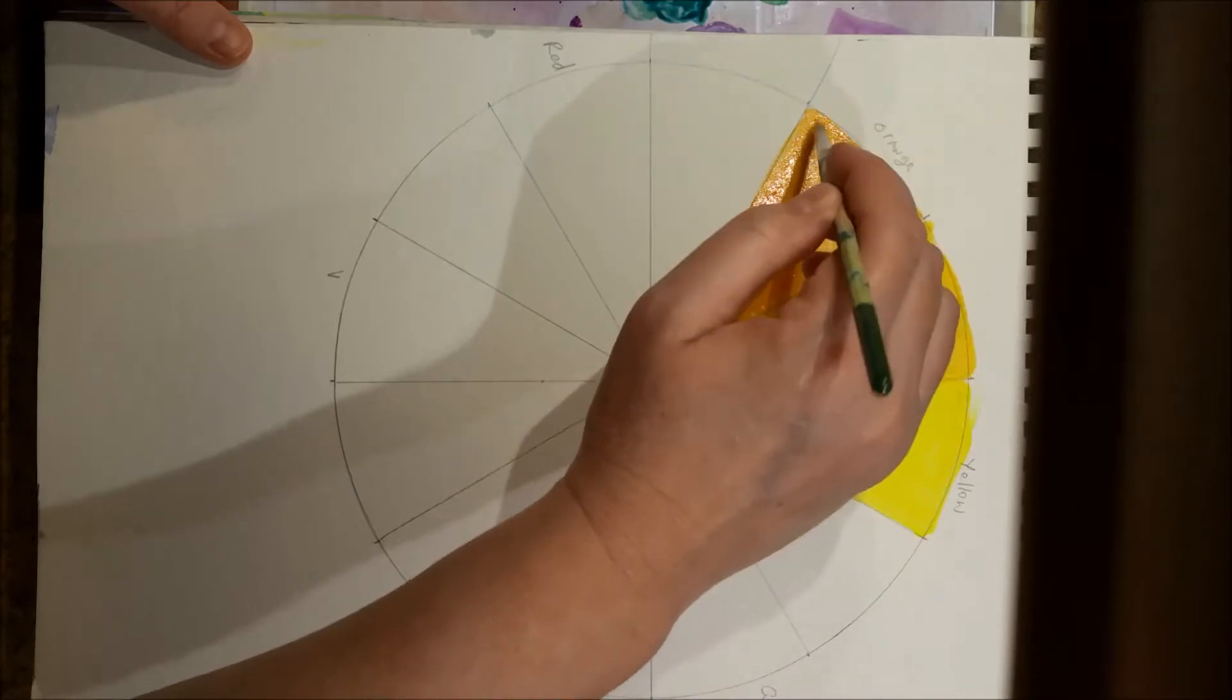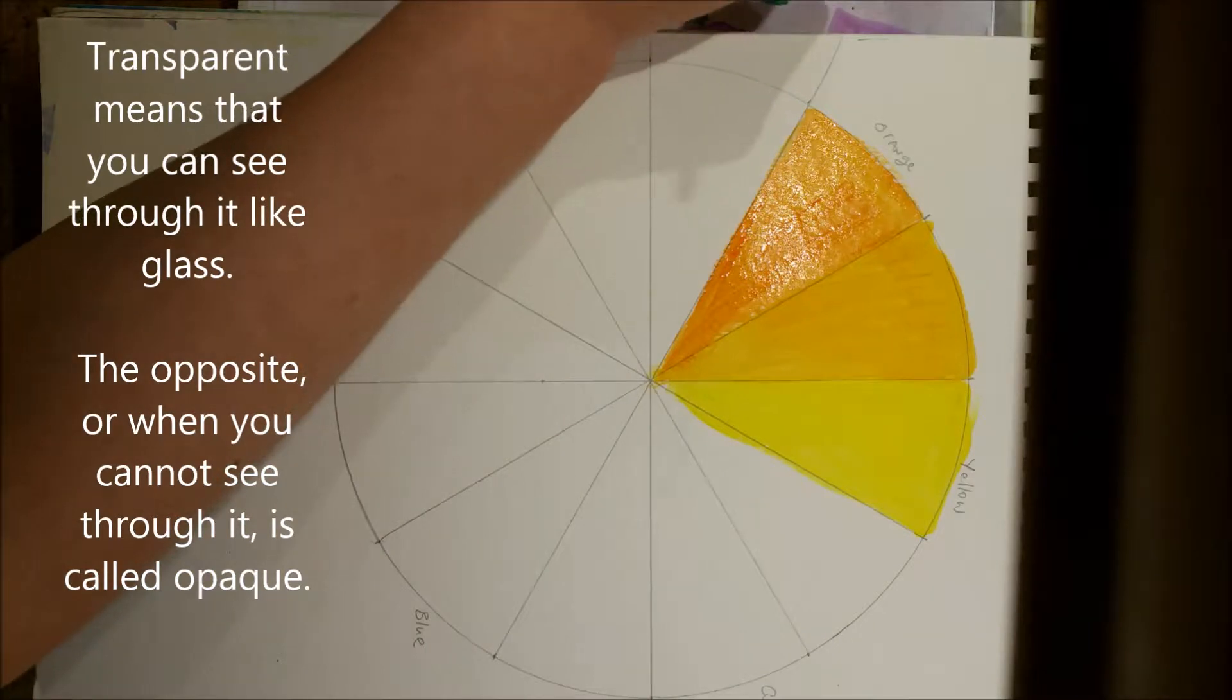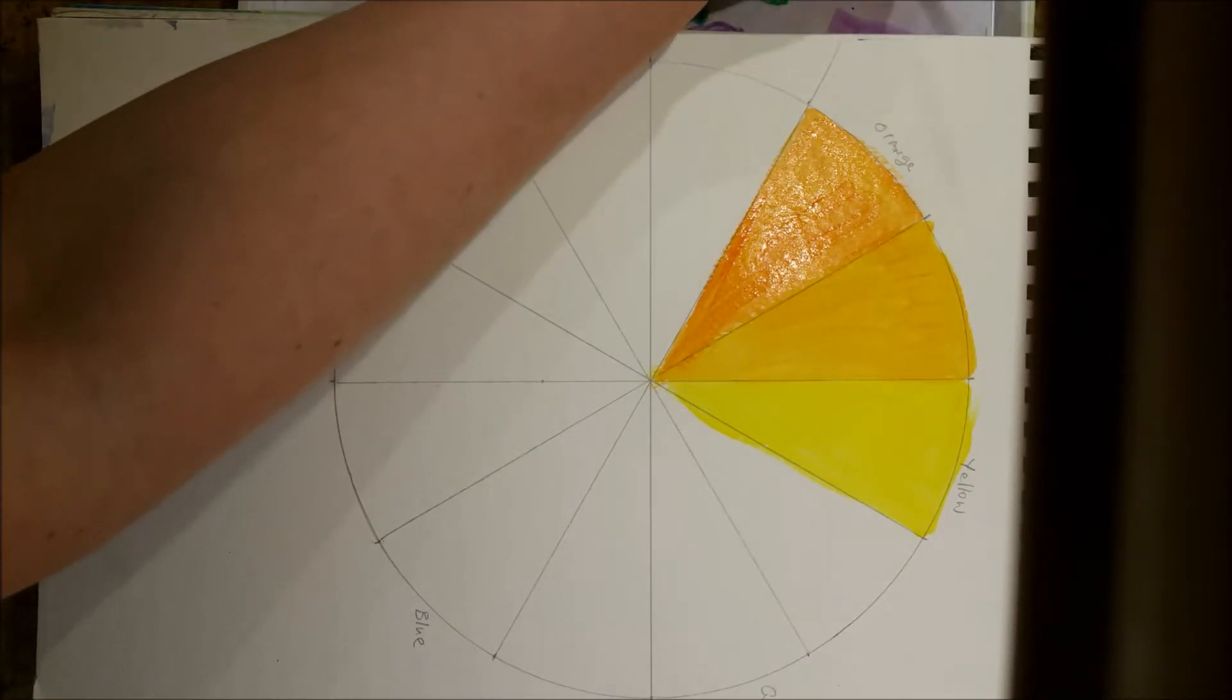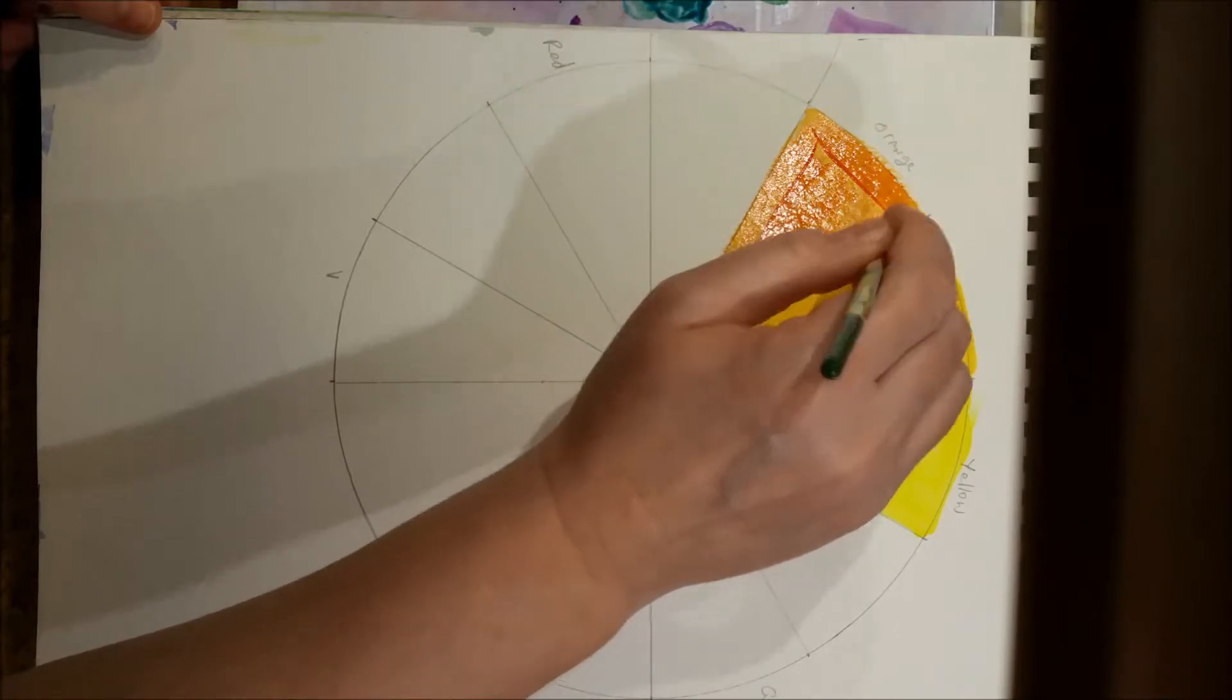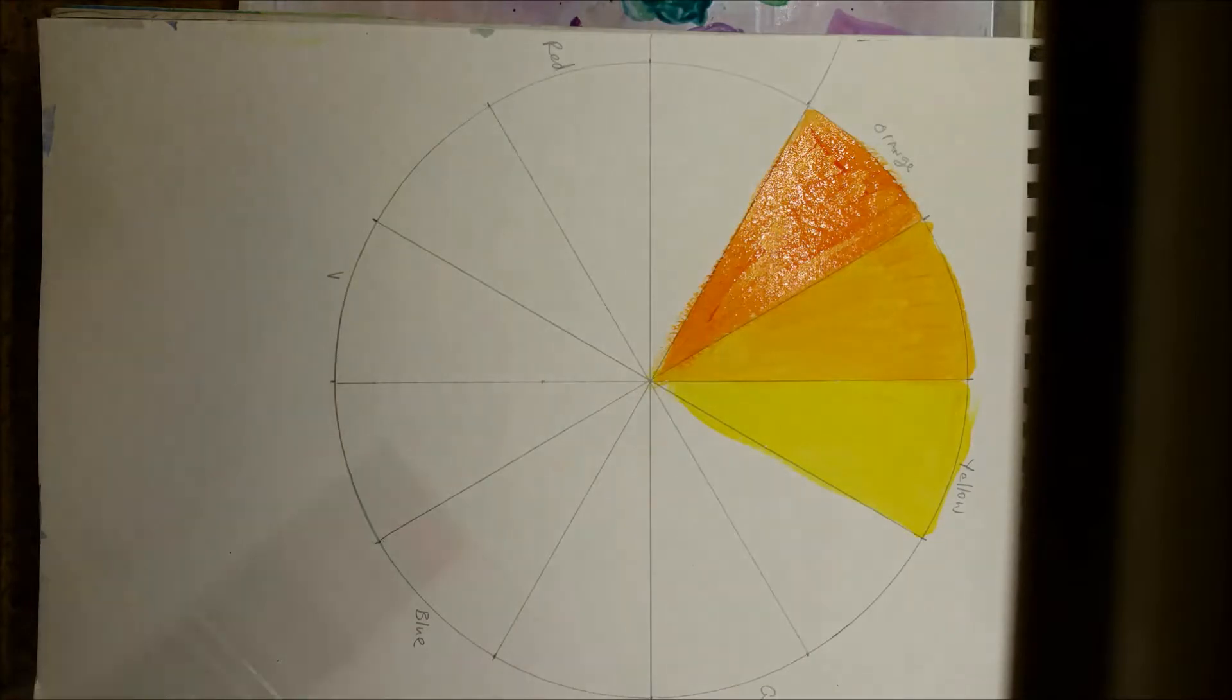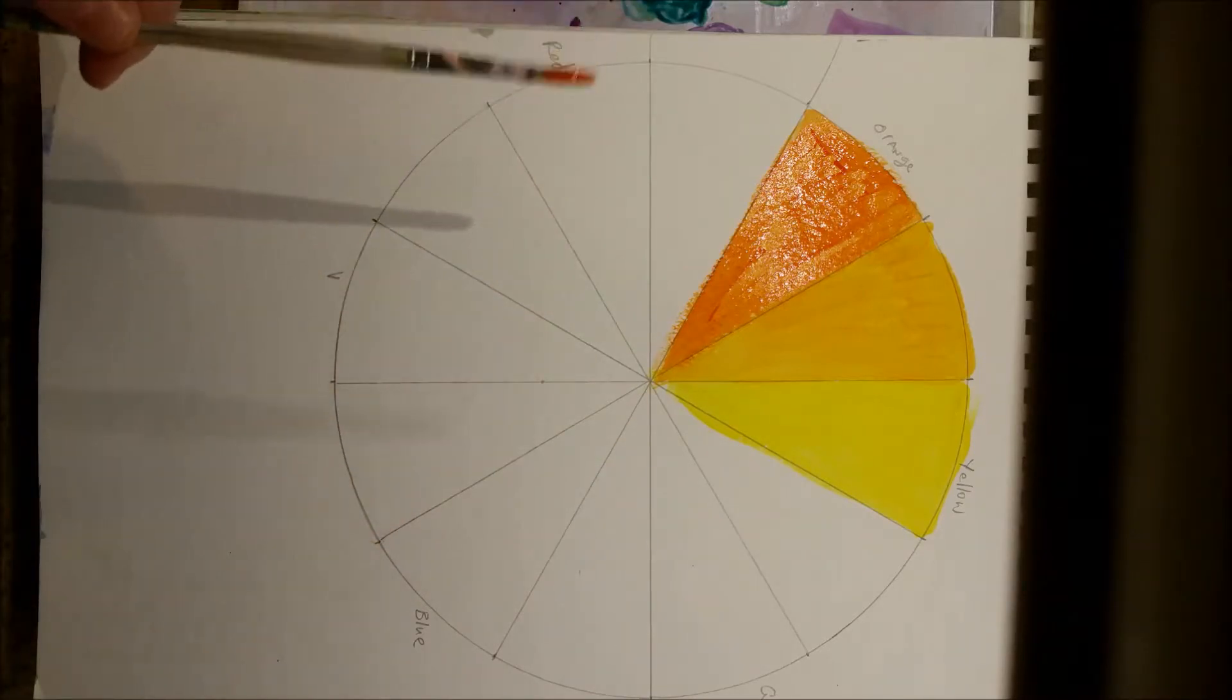This looks like it needs to be darker. It's kind of a transparent paint, so once you actually paint it onto the paper, sometimes you need to get it a little bit darker. So you get the basic idea. I'm going to continue to paint this, and I will come back and show you when I'm done.